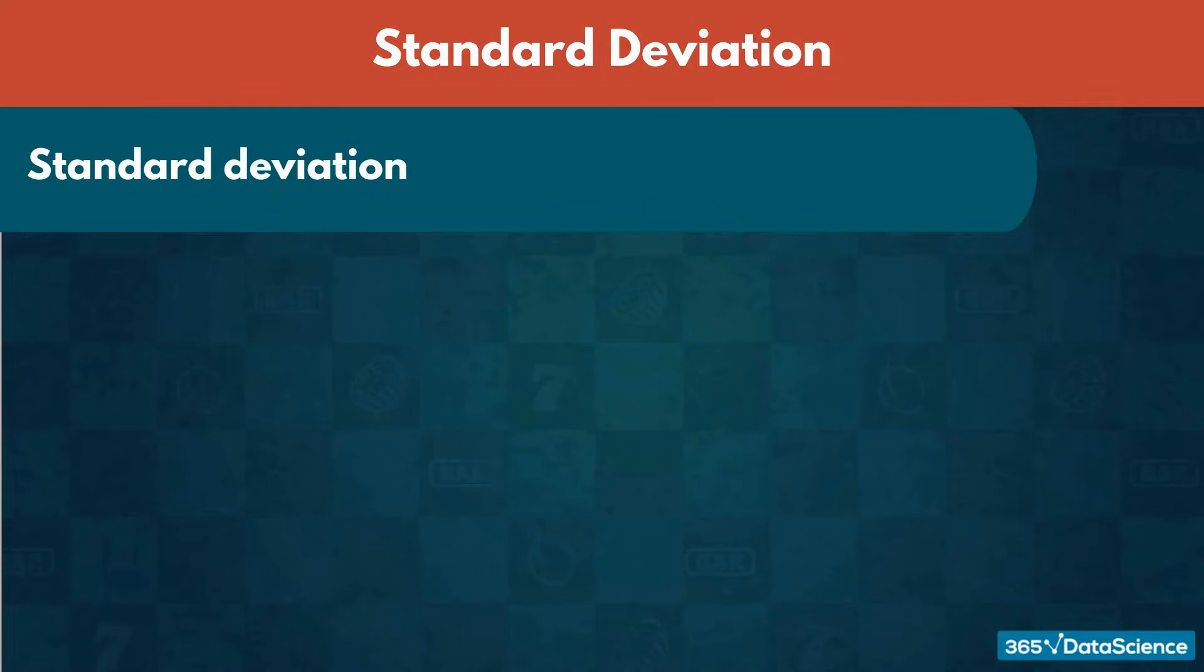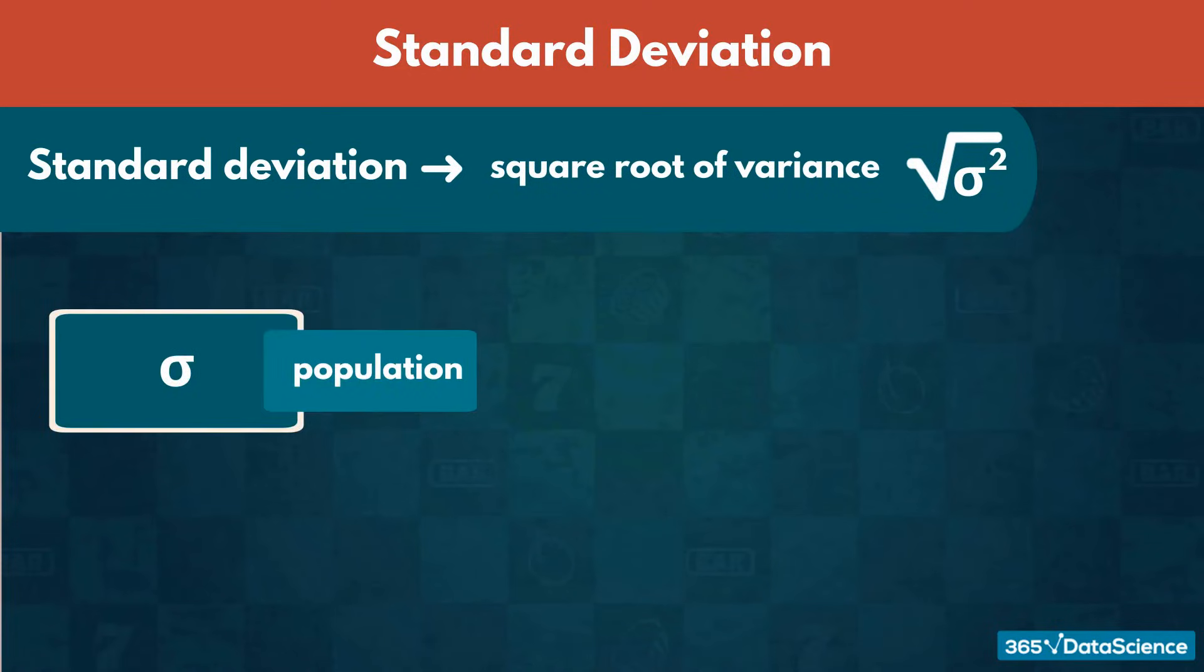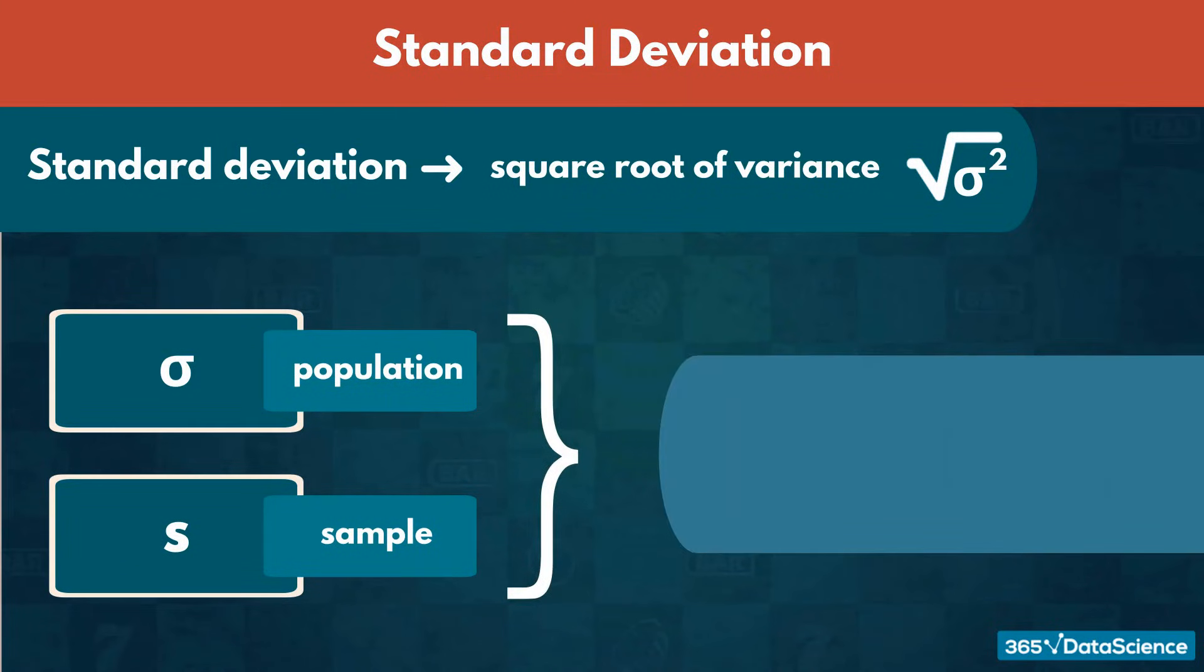Standard deviation is simply the positive square root of variance. As you may suspect, we denote it as sigma when dealing with a population and as S when dealing with a sample. Unlike variance, standard deviation is measured in the same units as the mean. Thus, we can directly interpret it and is often preferable.